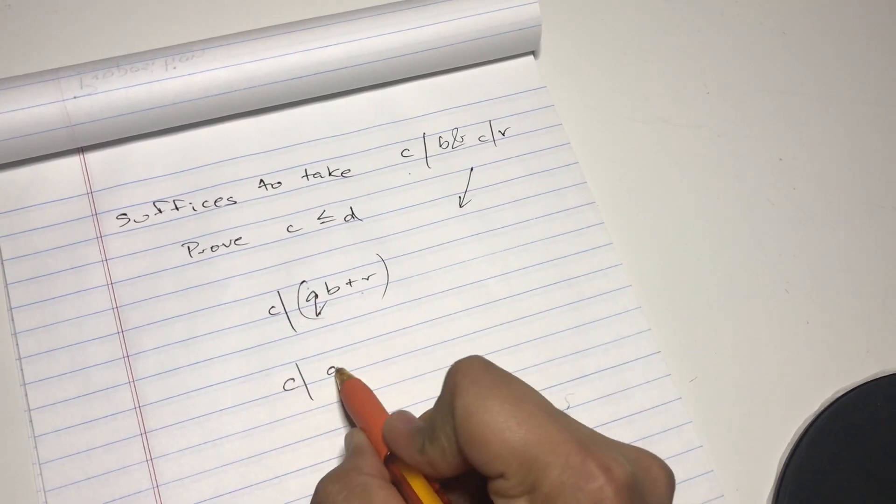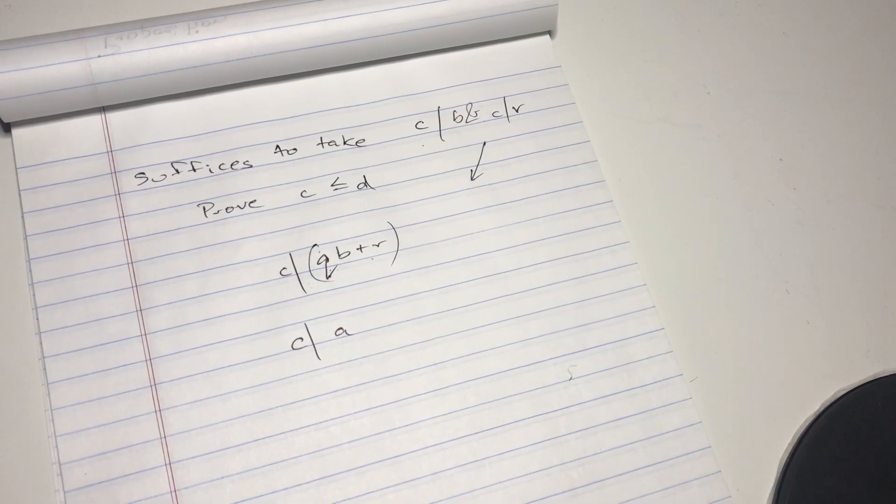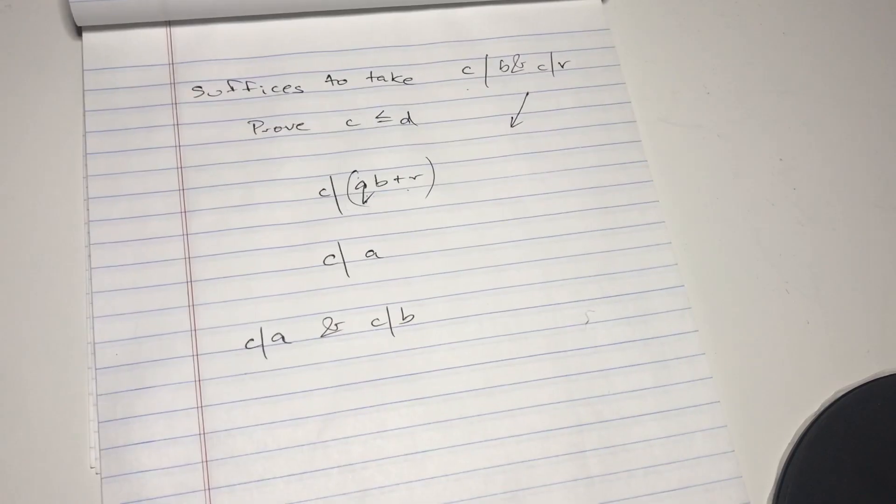So we have c divides a and c divides b, so c is a common divisor.